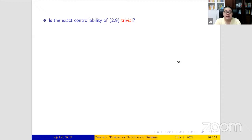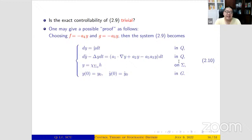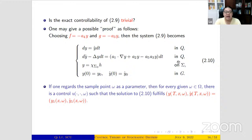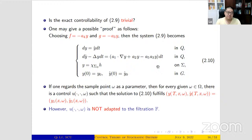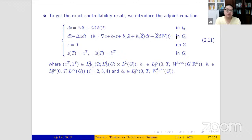Even though we show three controls are necessary and F and G must be placed everywhere on the domain, one might think the controllability result is trivial — by choosing F and G in feedback form to eliminate the diffusion term, getting a wave equation with random parameters, then fixing the sample point as a parameter to find an appropriate control. However, we can also prove that the control constructed in this way is not adapted — it implicitly uses information from the future, which is forbidden in the stochastic setting. How do we prove the controllability result? Similar to the ODE case, we introduce the adjoint equation — now a backward stochastic PDE — and prove that exact controllability is equivalent to an observability estimate.